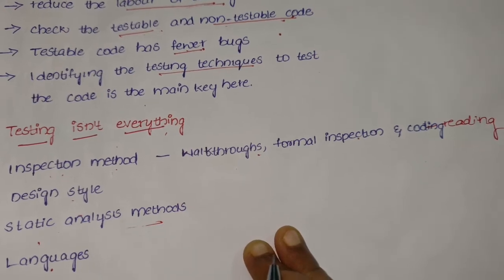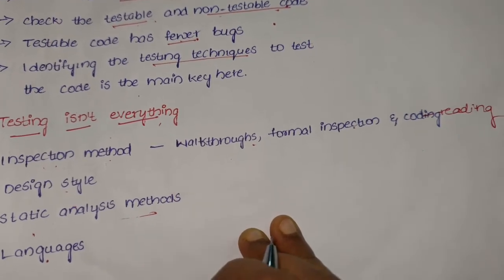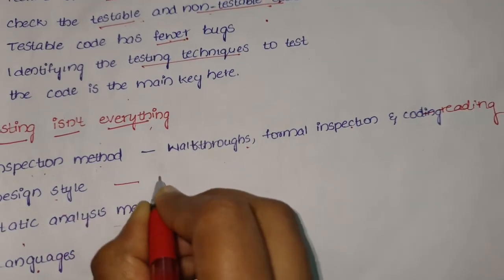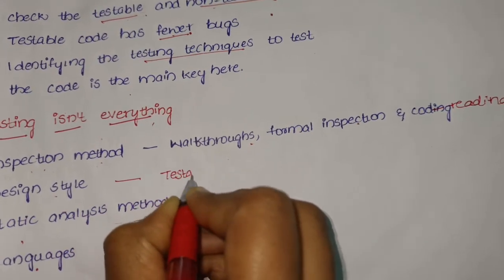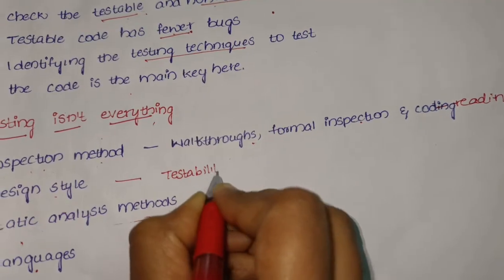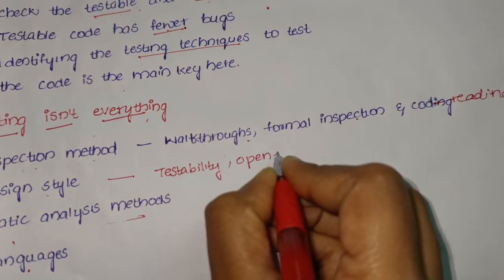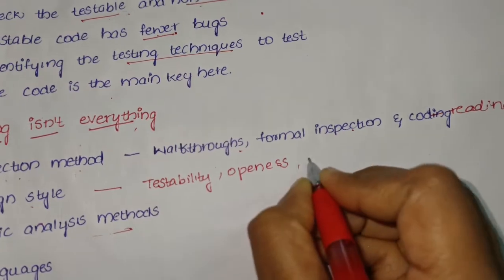In the design style, while designing the software itself, adopt stylistic objectives such as testability, openness, and clarity to prevent bugs.